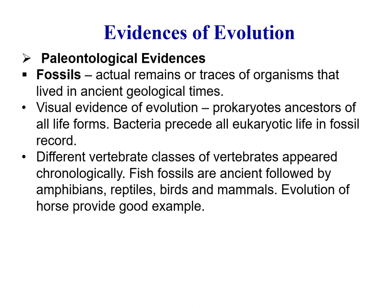Different vertebrate classes appear chronologically in the fossil record. For example, fossils of fish are the most ancient, followed by amphibians, then reptiles, birds, and then mammals. For this purpose, the evolution of the horse gives us a very good example of evolution.